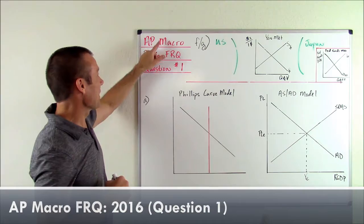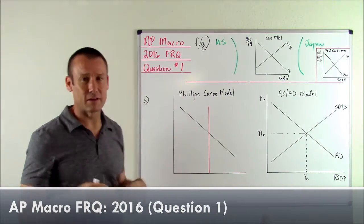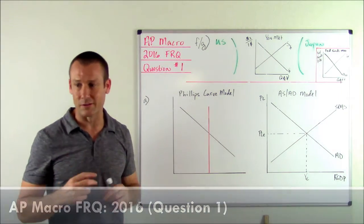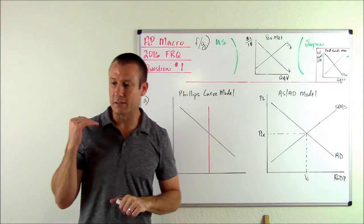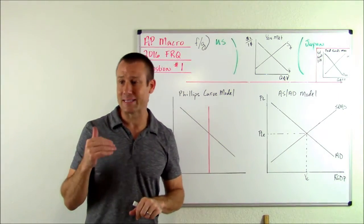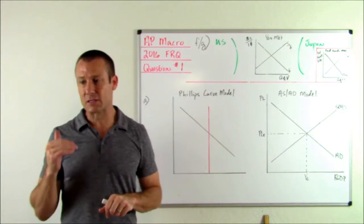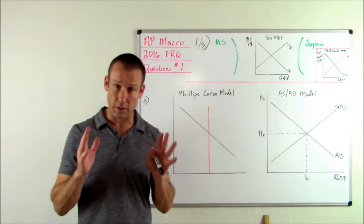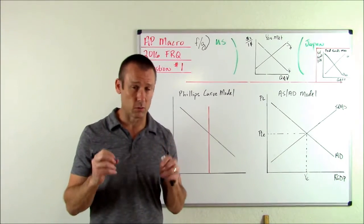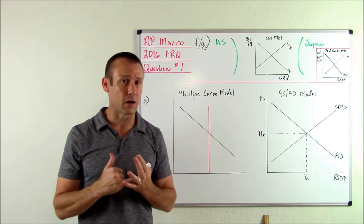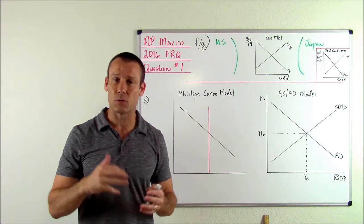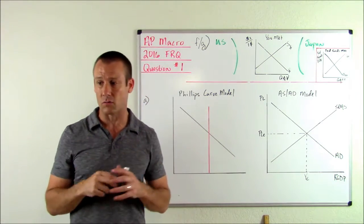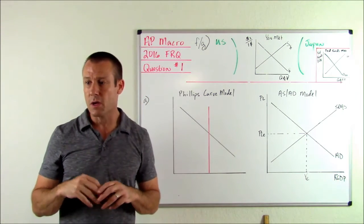Hey everybody, this is AP Macro 2016 FRQ, question number one, let's get to it. It says assume that the United States economy is currently in short-run equilibrium. So short-run equilibrium means we're not on our LRPC, we're not on our LRAS — we're not on a long-run equilibrium.